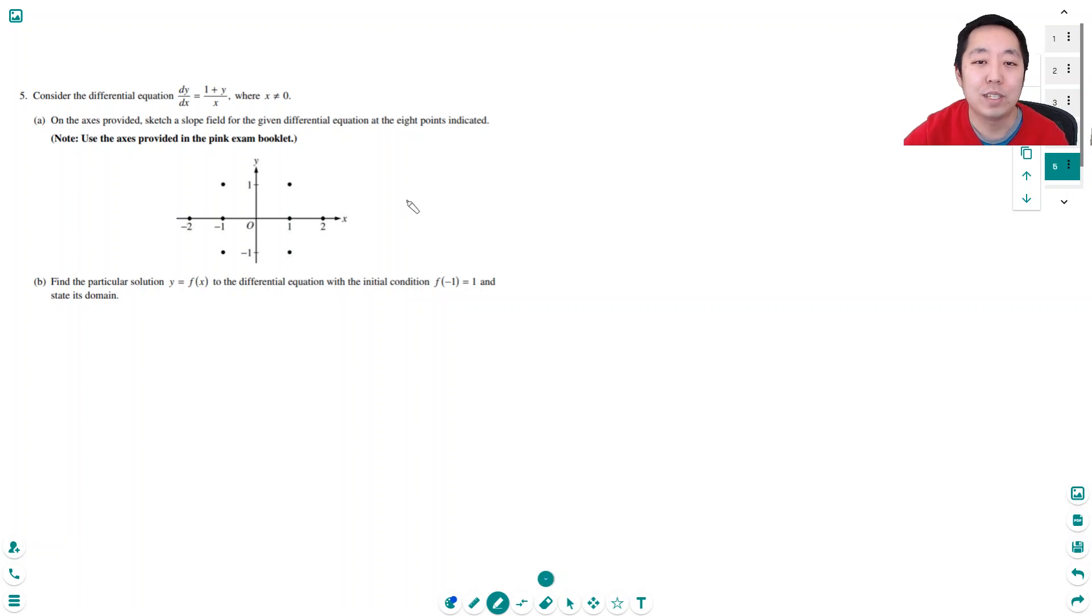Hey y'all, this is Alan with Bothell STEM Coach and today we are continuing on with an AP calculus free response question. This is from the 2006 exam and this is question number five. So we consider the differential equation dy/dx equals (1+y)/x. On the axis provided, sketch a slope field of the given differential equation at the eight points indicated.